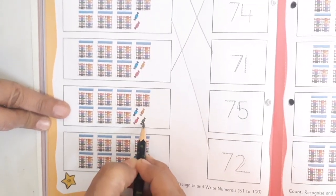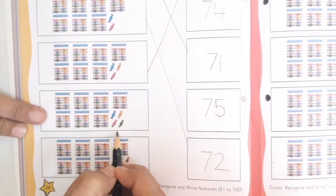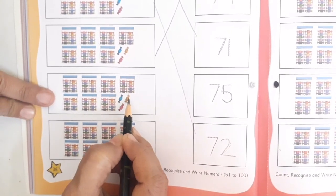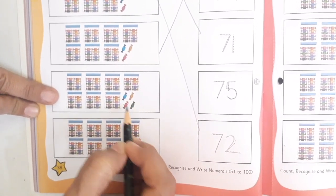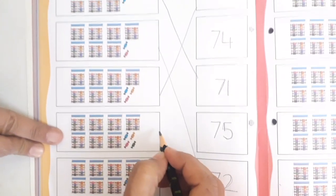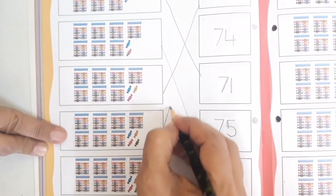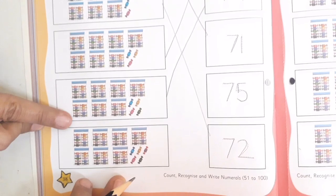So we are going to match the count with 73. Now here again 70 packets are there, and 1, 2, 3, and 4 chocolates are there, 4 more chocolates are there, right? So 71, 72, 73, 74. Children, count with me and match with the correct numeral.